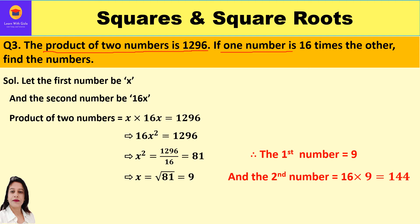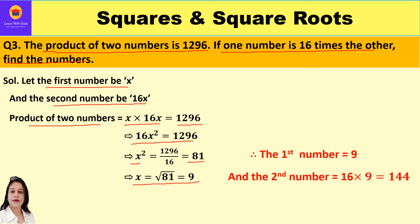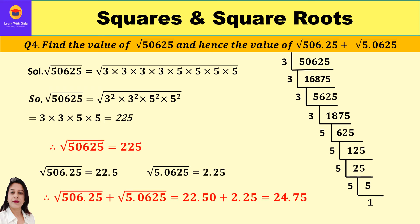Third question: the product of two numbers is 1296; if one number is 16 times the other, find the numbers. Let the first number be x, so the second is 16x. Then x × 16x = 1296, so 16x² = 1296, x² = 1296 ÷ 16 = 81, and x = √81 = 9. The first number is 9 and the second is 16 × 9 = 144.